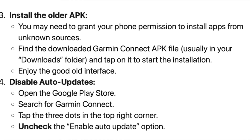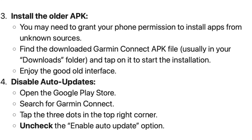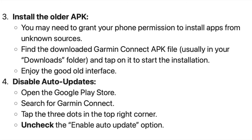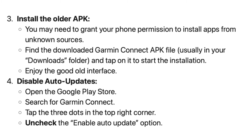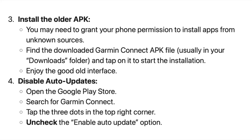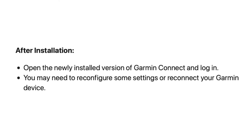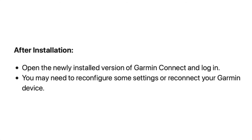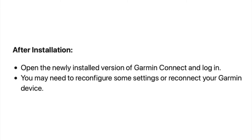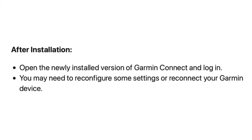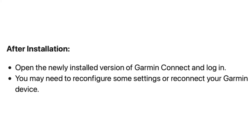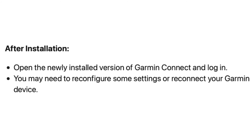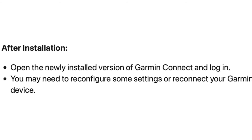Right after that, disable auto-updates by going into the Google Play Store, searching for Garmin Connect, and unchecking the enable auto-update option. The last step is to log into the newly installed app with your Garmin Connect username and password. You may need to configure the settings as some of them may not have carried over from the previous version.